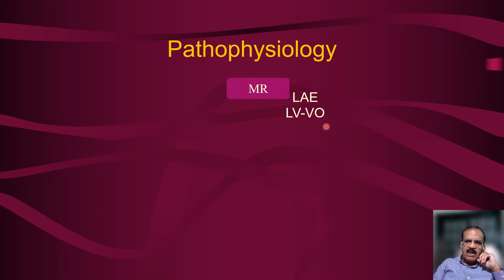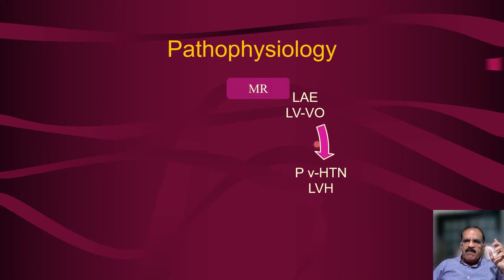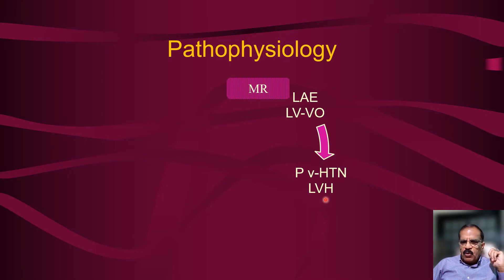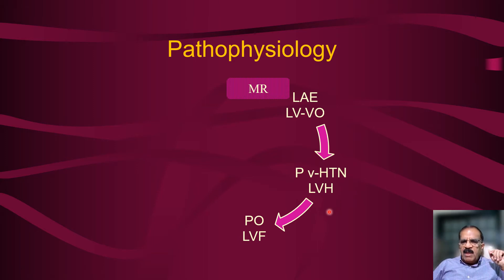The elevated pressure in the left atrium is transmitted backward into the pulmonary veins and pulmonary capillaries, causing pulmonary venous hypertension. This is a passive phenomenon — if we correct the mitral regurgitation, this venous hypertension will normalize. Left ventricular hypertrophy also occurs because, as per Starling's law, if a ventricle receives more venous return it contracts with greater force, producing greater stroke volume, leading to left ventricular hypertrophy and dilatation. This translates into clinical features like displacement of the apex beat and certain ECG changes.